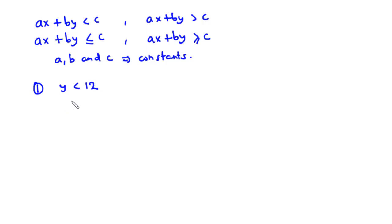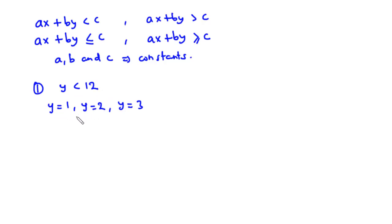We want to find the solution set for this inequality. From inspection, if y = 1, y = 2, or y = 3, then these values satisfy the linear inequality. However, these are not the only solutions — there are infinitely many solutions. Since we cannot write down all possible solutions, a good way to describe the solution set is by graph.